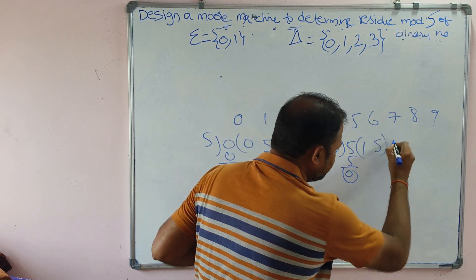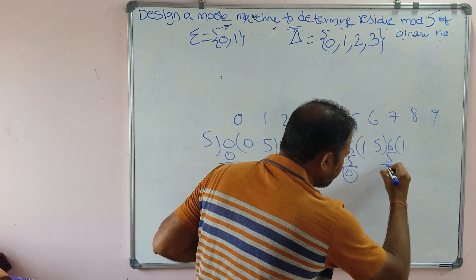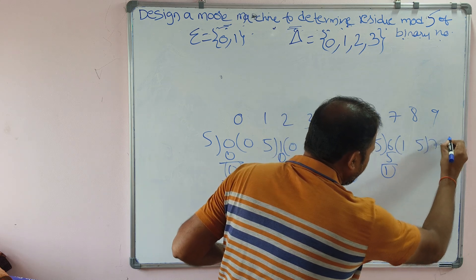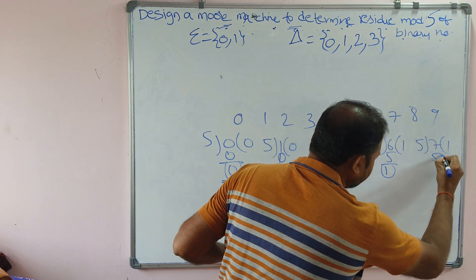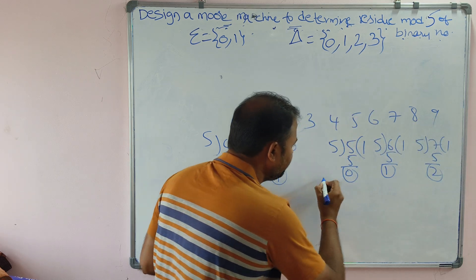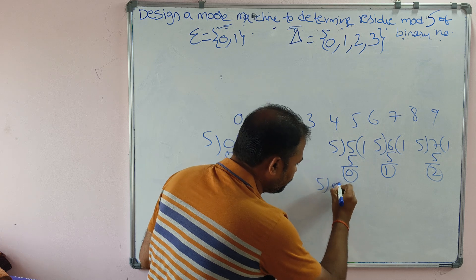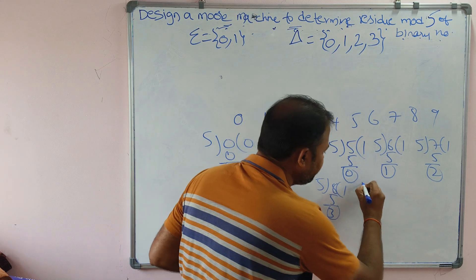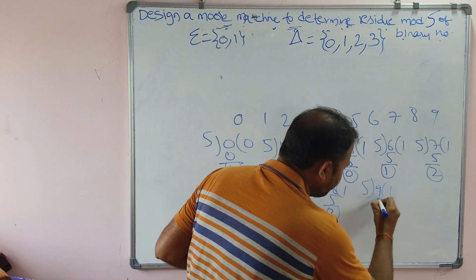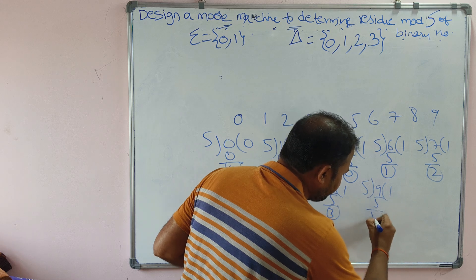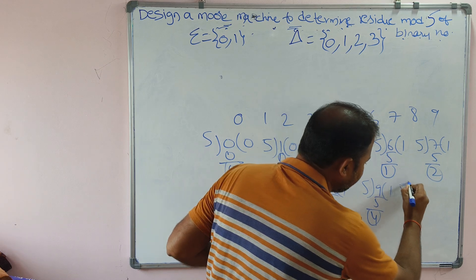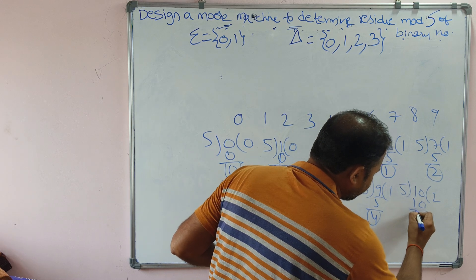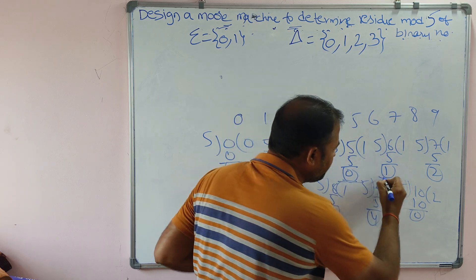For 6: 5 times 1 is 5, so 6 minus 5 means remainder 1. For 7: 7 minus 5 means remainder 2. For 8: 8 minus 5 means remainder 3. For 9: 9 minus 5 means remainder 4. For 10: 5 times 2 is 10, so 10 minus 10 means remainder 0. So maximum we will get 5 remainders.